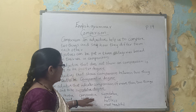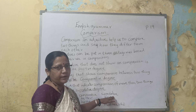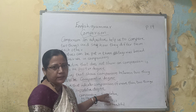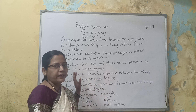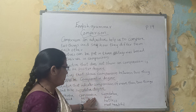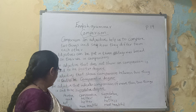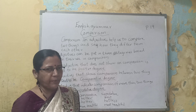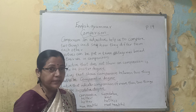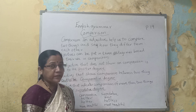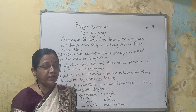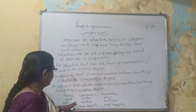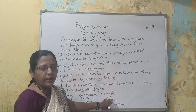An adjective that indicates comparison for more than two things is said to be Superlative. Do se bhi jayada iska comparison hota hai. These are the three degrees: Positive, Comparative, Superlative. For example — hot, hotter, hottest. Hot bolenge to garam hai. Hotter bolenge to thoda zyada garam hai. Hottest bolenge to itna garam hai ki usse zyada koi cheez nahi. Yeh teen degree mein aata hai.